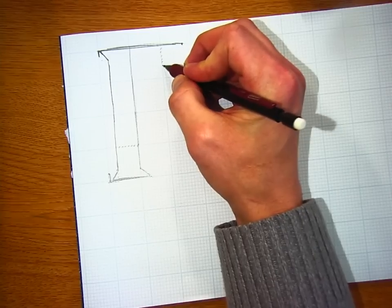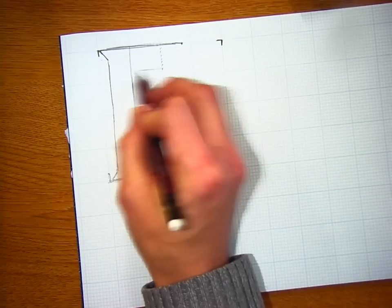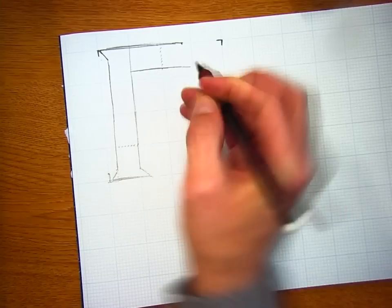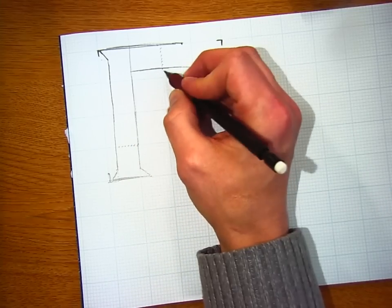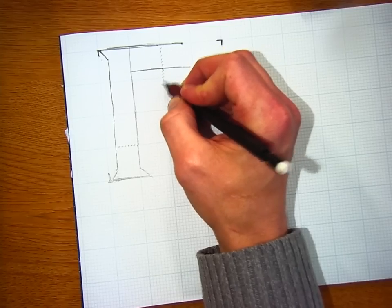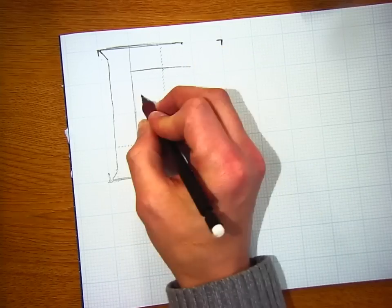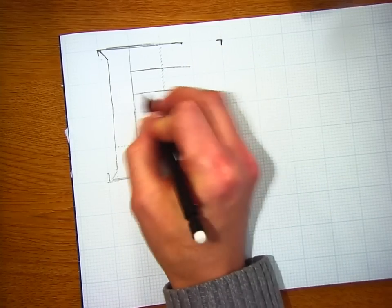So I'm going to go 1, 2, 3, 4, 5, 6, 7, and I'm going to draw a line across like that. And then the counter, the negative space, will also be 7. So I'll go 1, 2, 3, 4, 5, 6, 7, and bring that across.